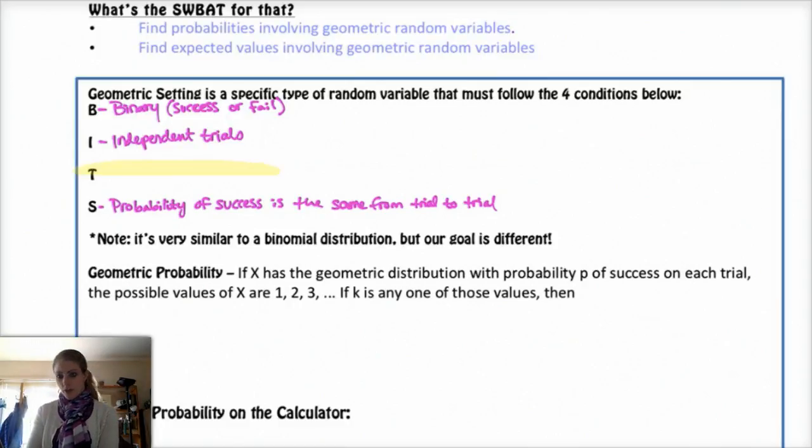For a geometric setting, your number of trials is unknown. Basically, you're looking at the probability of getting a success for the first time in a certain number of roles. You might say, what is the probability of flipping a coin and having the first head be on the fifth flip? You might look at something like that.